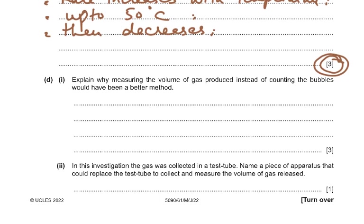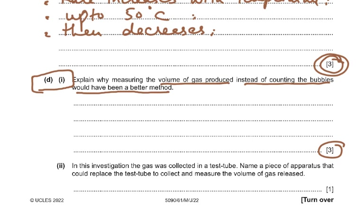Part d1: explain why measuring the volume of gas produced instead of counting the bubbles would have been a better method - that's three marks. Because bubble size varies - two small bubbles versus two large bubbles may represent very different volumes. You can also miscount bubbles if they are produced very fast. Measuring volume is more accurate and more precise. Use the words 'precise' or 'accurate', not just 'better' or 'reliable'.